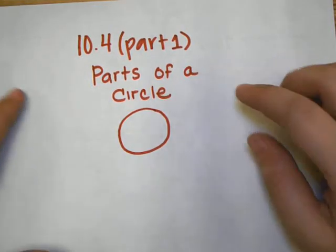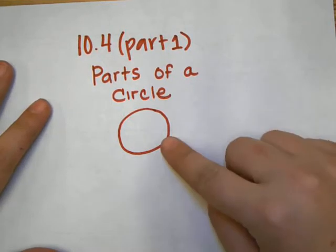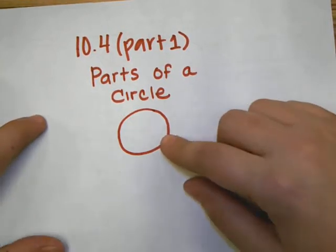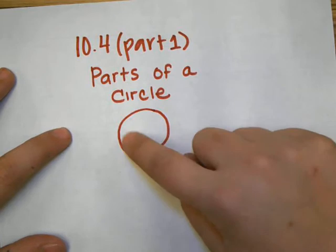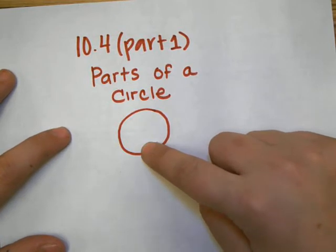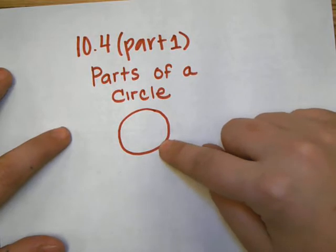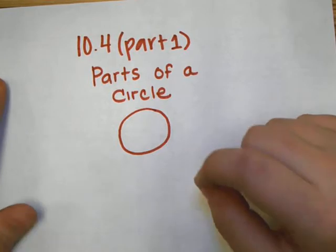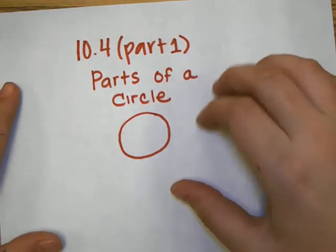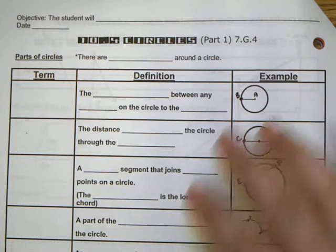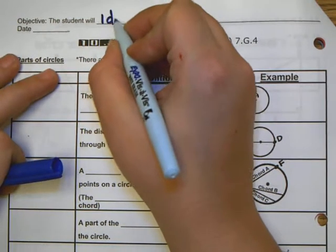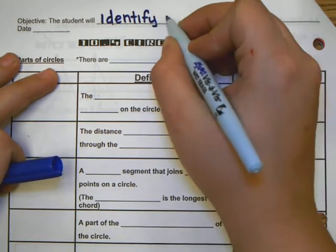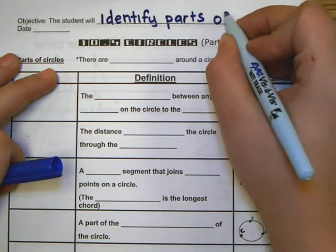This lesson discusses some key vocabulary for circles. As a review, a circle is not a polygon — it has curves. Last week and yesterday we talked about quadrilaterals and polygons. Now we're moving into circles, which are not polygons. Go ahead and take out your notes. Our objective today is: the student will identify parts of a circle.